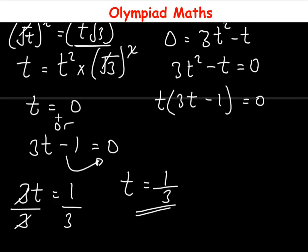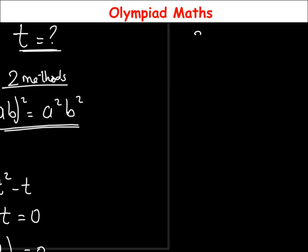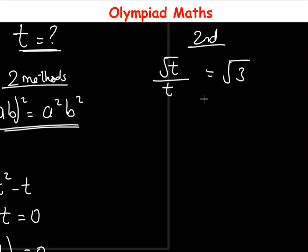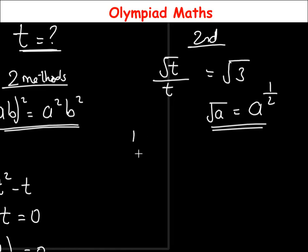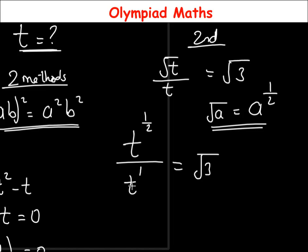We've gotten the values t equals 0 and t equals 1/3 using the first method. For the second method, the equation is √t over t equals √3. We bring in the identity that √a equals a raised to the power 1/2, so √t becomes t^(1/2), and the expression becomes t^(1/2) over t, where t has an implied power of 1.